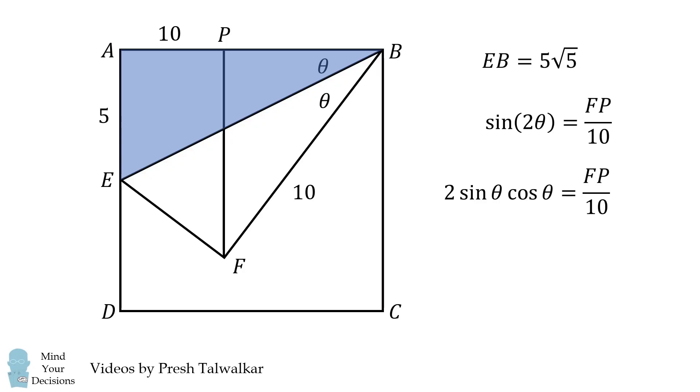We can readily get from the triangle ABE. We calculate the values for sine of theta and cosine of theta, and substitute those into the formula. We then simplify, and we will solve that FP is equal to 8.